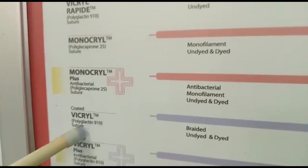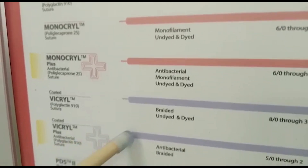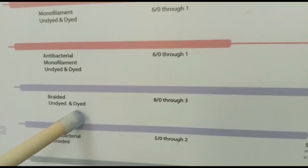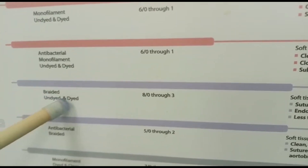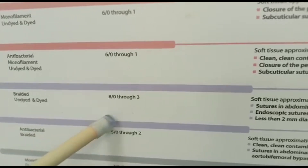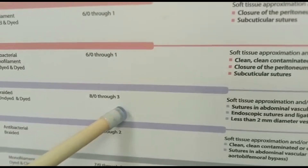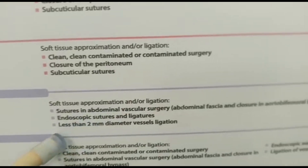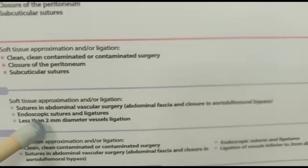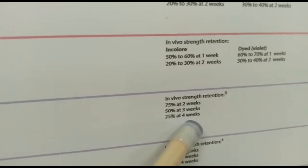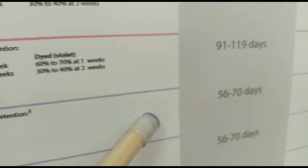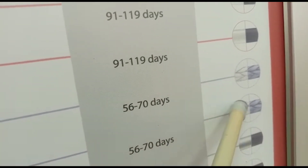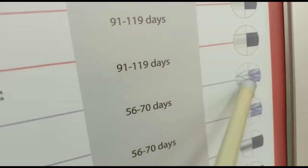Another absorbable suture is Vicryl. Vicryl sutures are also braided, meaning woven. There are dyed and undyed Vicryl sutures. They come in different sizes from 8-0 through 3. Vicryl is used for soft tissues, abdominal and vascular surgeries, endoscopic surgeries, and closing tissues that are less than two millimeters. They can hold tissues for up to two months, and complete absorption takes 56 to 70 days. These are woven sutures.